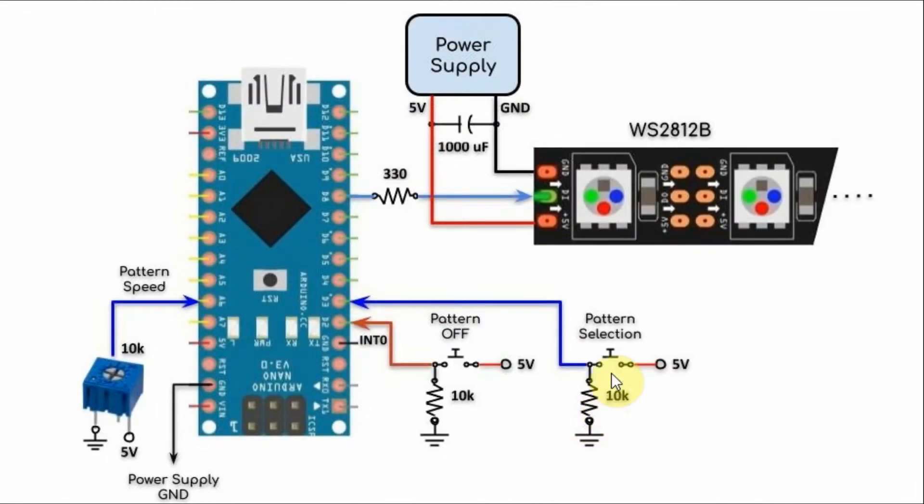We have a push button connected to digital pin D3 of the Arduino. When this button is pressed, the first pattern is displayed on the module.